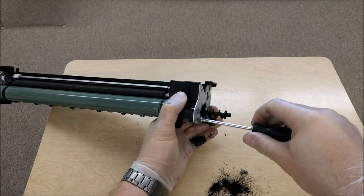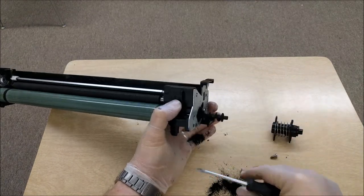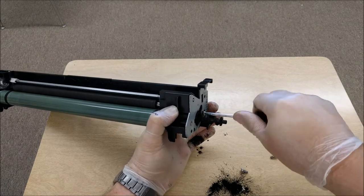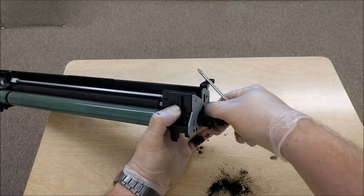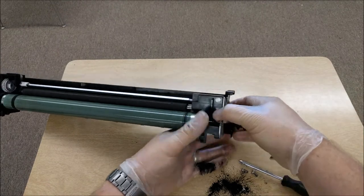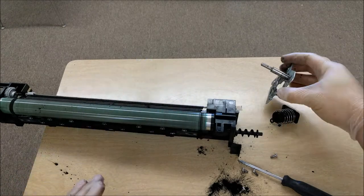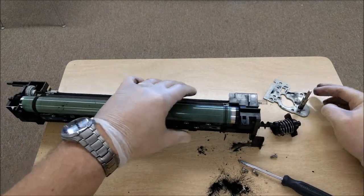There's two more screws that actually hold the faceplate on. Remove those and you are ready to pull that metal plate off. That is what holds the drum in.